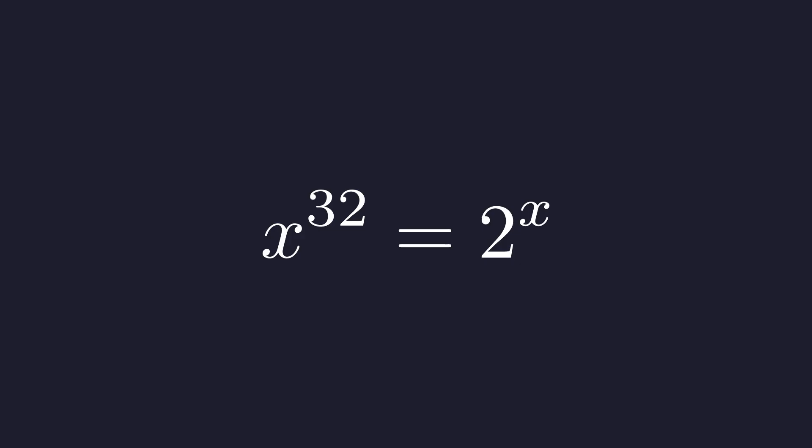This allows us to check the entire negative number line. The equation becomes negative y to the 32nd power equals 2 to the power of negative y. Since 32 is an even exponent, negative y raised to the 32nd power is the same as positive y to the 32nd power. This simplifies the left-hand side. On the right side, 2 to the power of negative y is simply 1 divided by 2 to the power of y. This gets rid of the negative exponent.